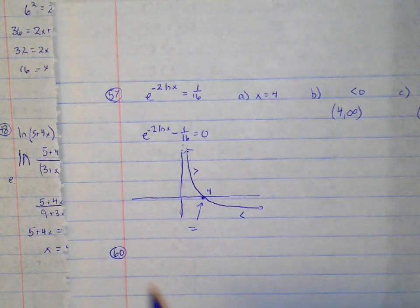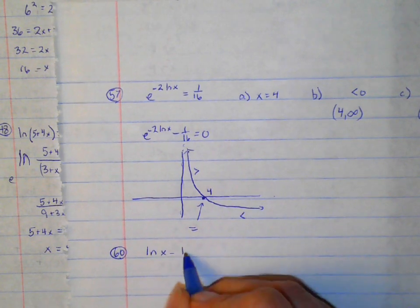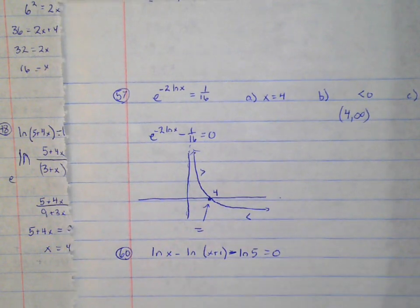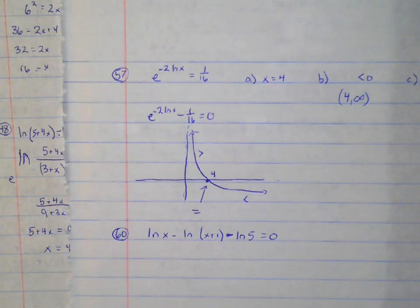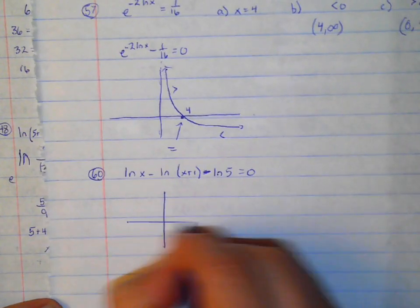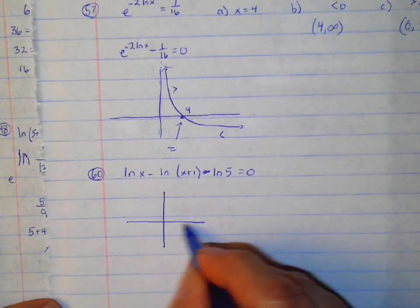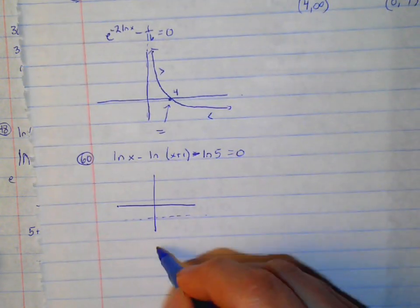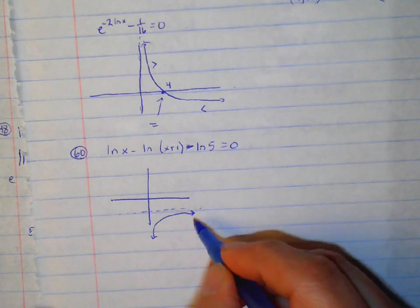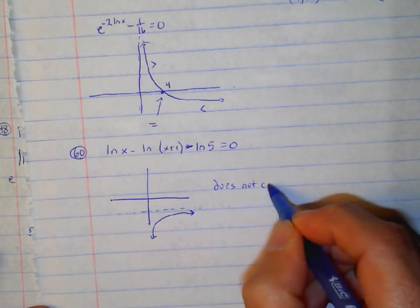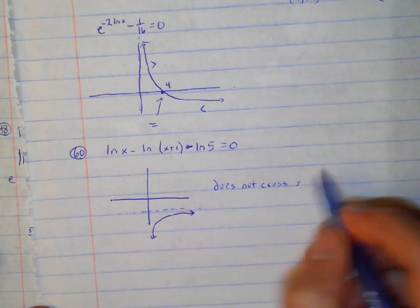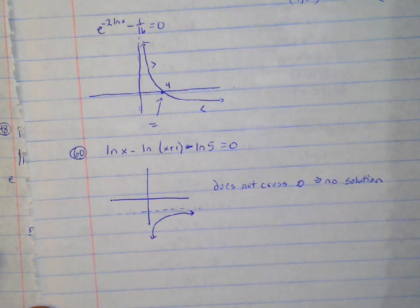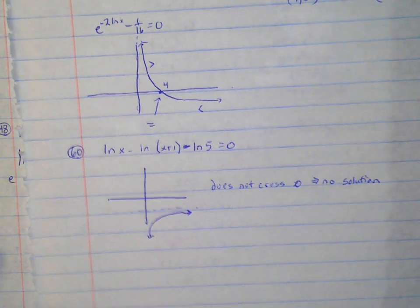Number 60: use a graph to explain why this has no solution. I'm going to subtract the ln 5 over so I have it equal to 0, then look at that graph — it's not going to cross the x-axis. By looking at this graph, there would be an asymptote at 0, and with the minus ln 5, that takes it down even farther. Our asymptote is in that direction, so the graph does not cross x equals 0. Therefore, there's no solution. That's the end — come to class with some homework questions.